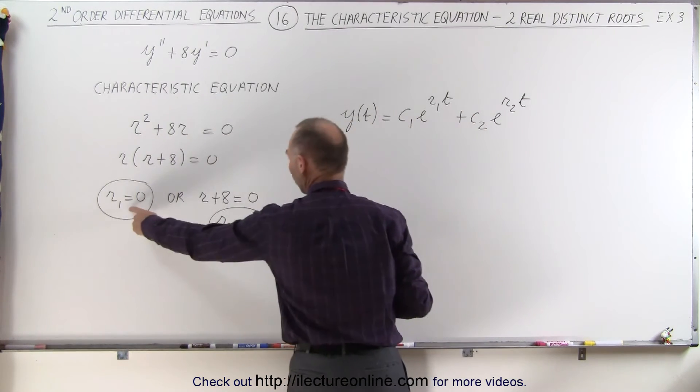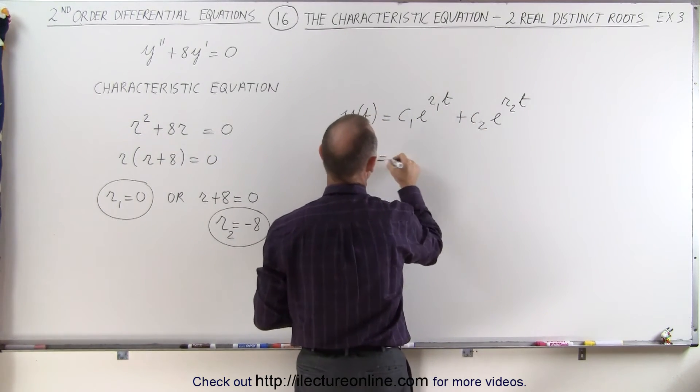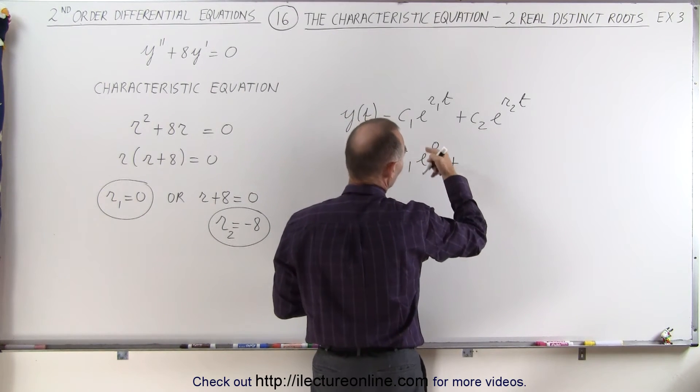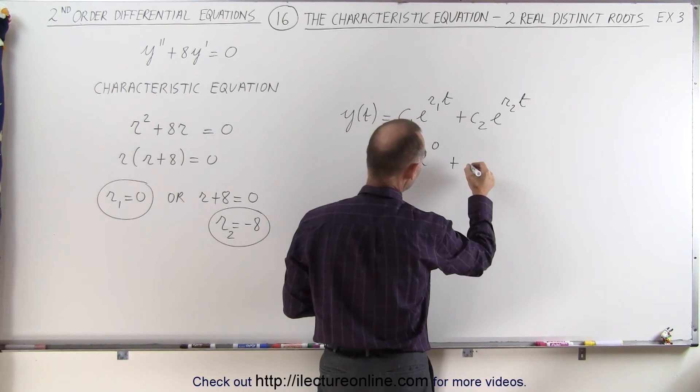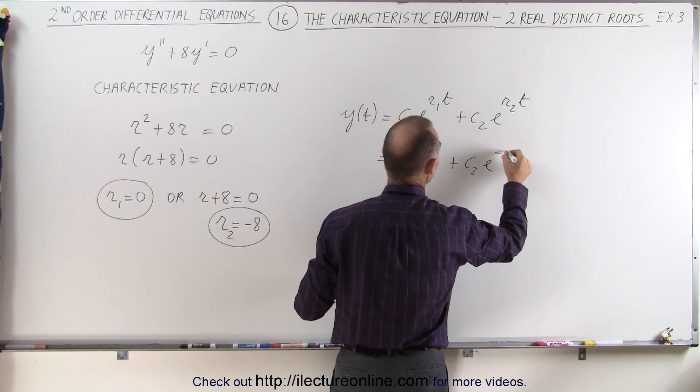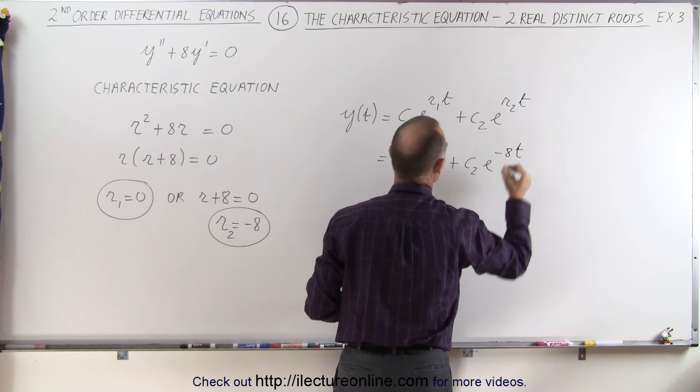Now, since our first root is zero, this becomes c1 e to the zero times t plus, and of course zero times t is still zero, times c2 e to the minus 8 times t.